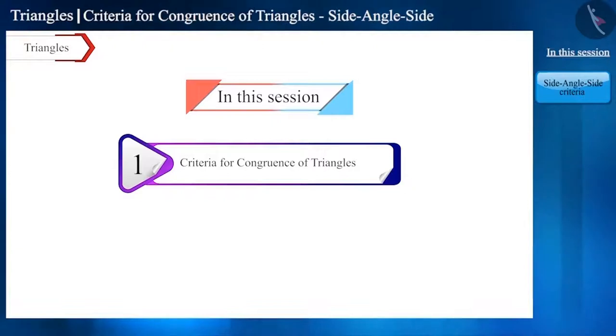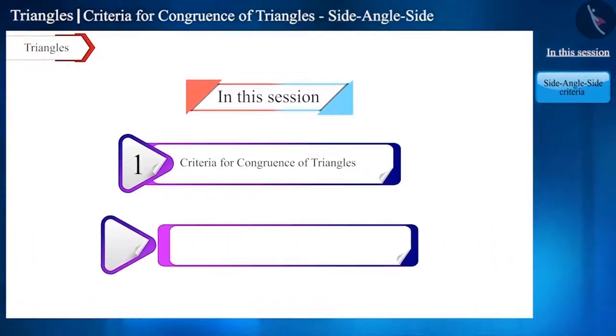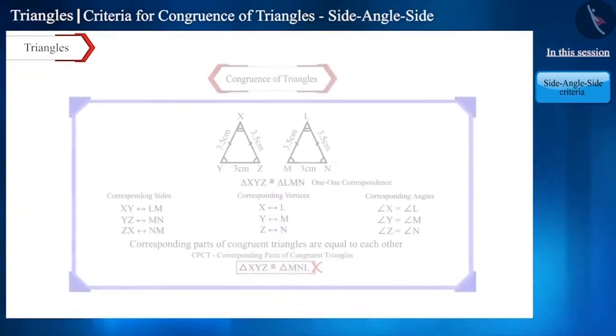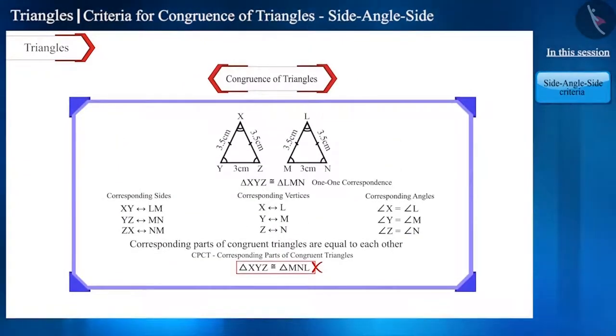The first criterion is side-angle-side. Friends, when two triangles are congruent, then there is one-to-one correspondence between their sides, angles and vertices.